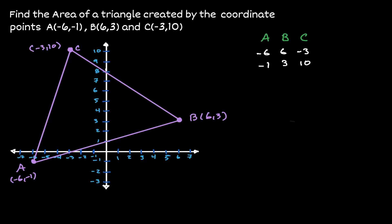But we always need to close the loop. So if we started with A, we need to go back and list A again. -6, -1. And now that we have listed these values in this very specific order,